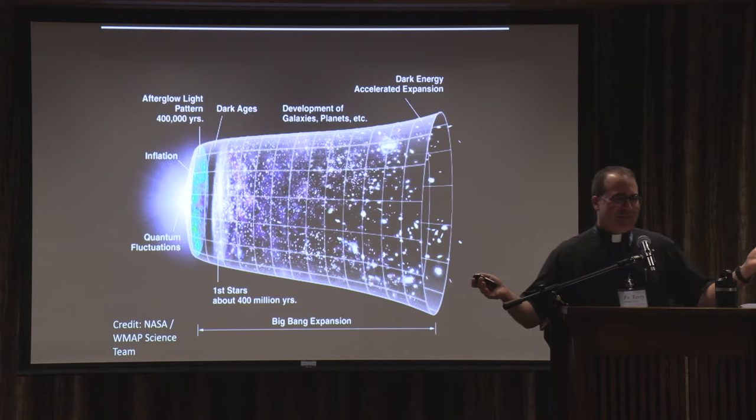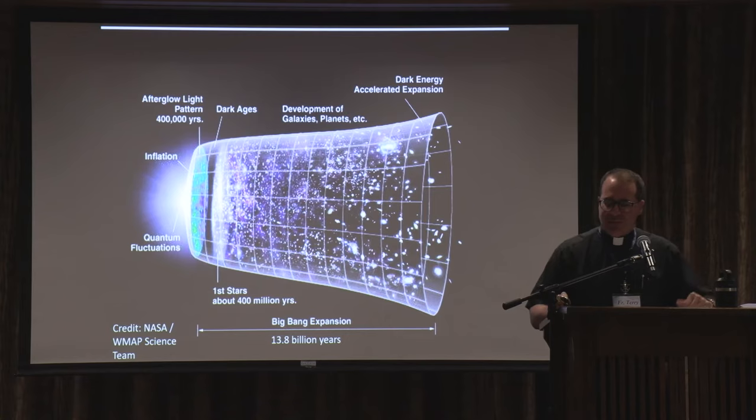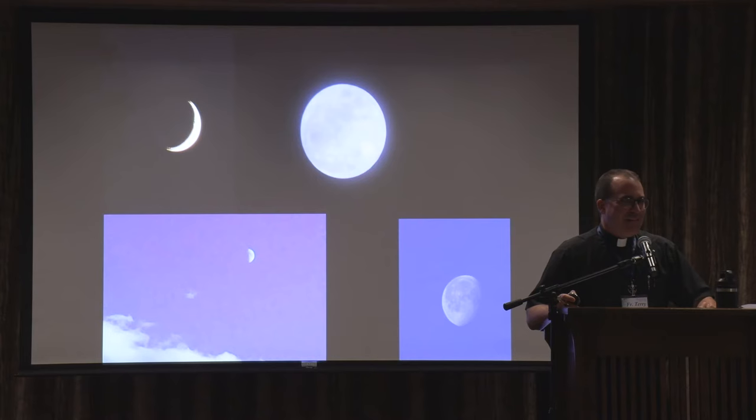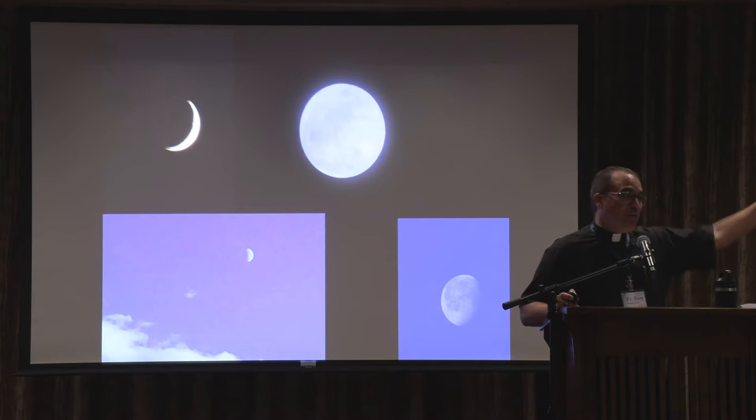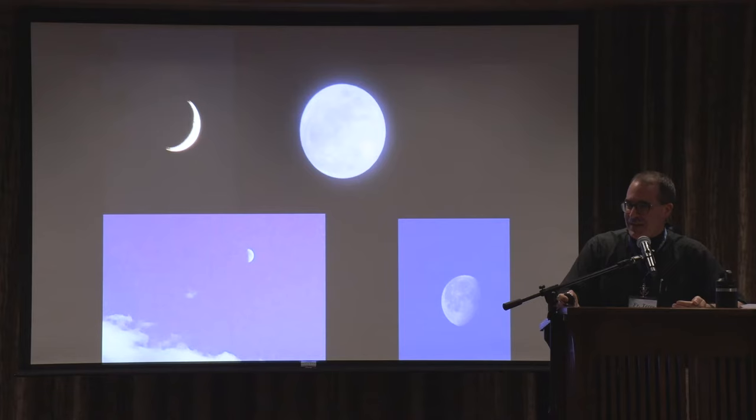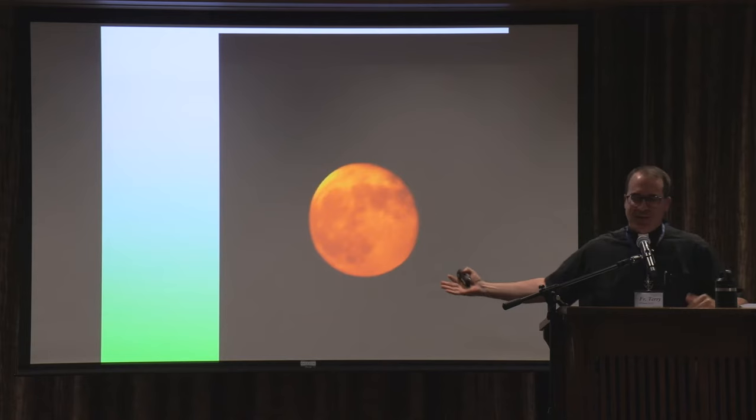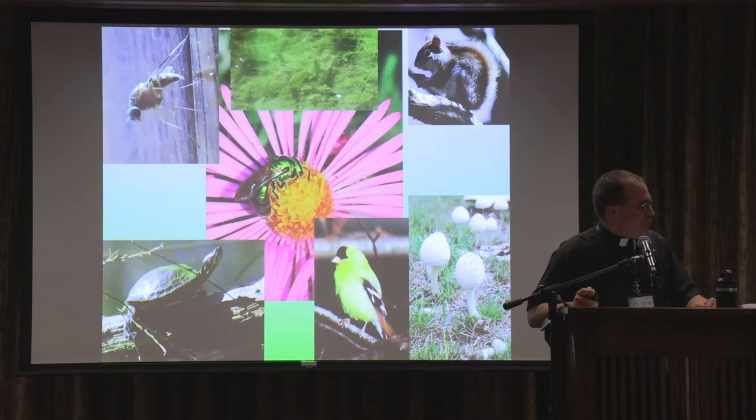The age of the universe: 13.8 billion years — it was just upgraded from 13.7 to 13.8 a couple years ago. What is the current phase of the moon? It was just a full moon last night, so now we're on the back side. It's a waning gibbous — getting smaller on the right-hand side.